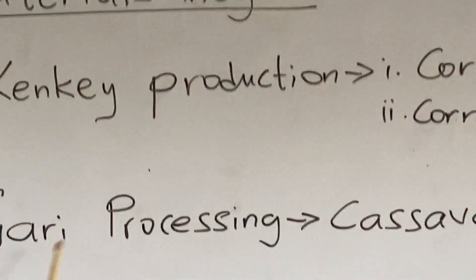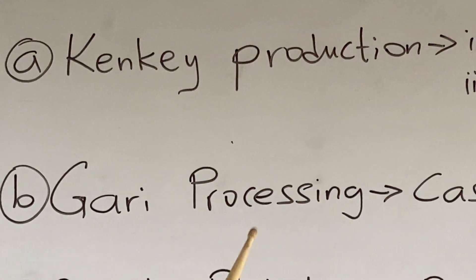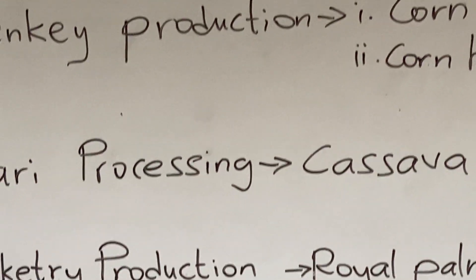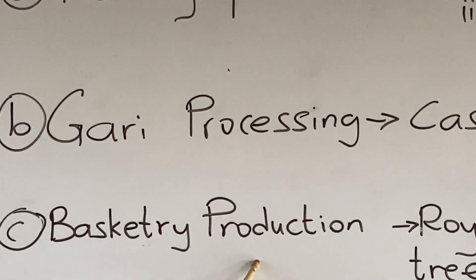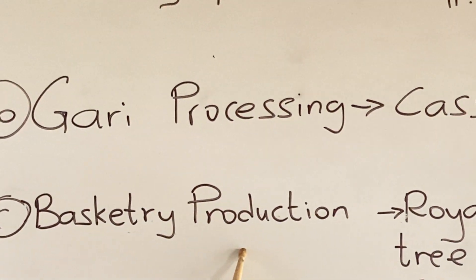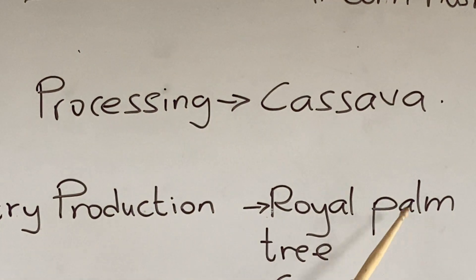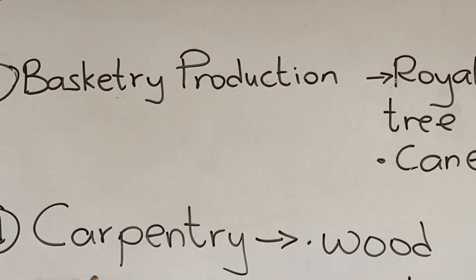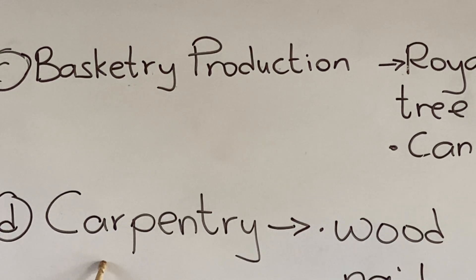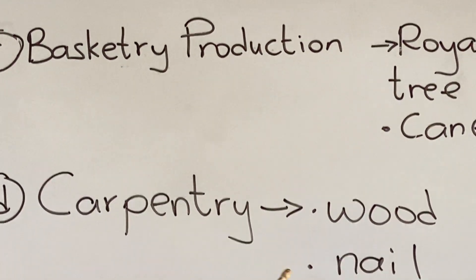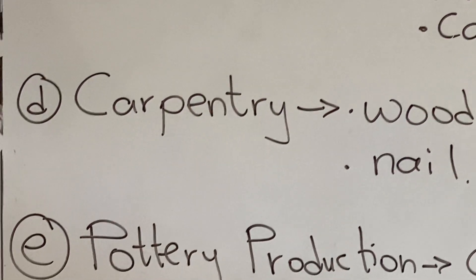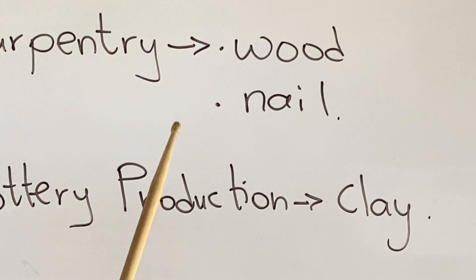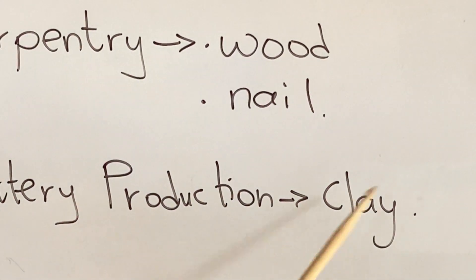The raw materials used for the production of kenkey are corn and the corn husk. Next, garri processing industry — the raw material they use there is cassava; they process the cassava into garri. The raw material used in woodworking is wood and nails. The raw material used for pottery is clay.